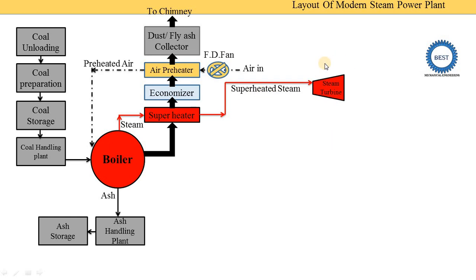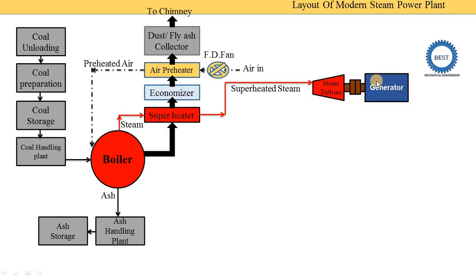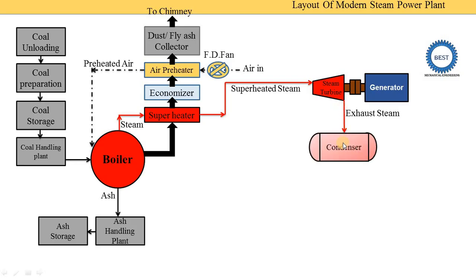In the turbine, the energy of the steam is converted into mechanical energy. The turbine has three stages: high pressure, intermediate pressure, and low pressure. The mechanical energy produced by the turbine is supplied to the generator, which produces electricity. So the chemical energy of coal is ultimately converted into electricity. The exhaust steam from the turbine is supplied to the condenser. The condenser is a type of heat exchanger where condensation occurs — steam is converted into liquid, called condensate.